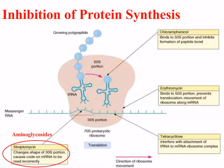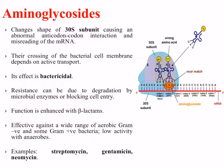The fourth and last class of protein synthesis inhibitors are the aminoglycosides, of which streptomycin is a member. This affects the 30S ribosome, changing its shape and causing codons on mRNA to be read incorrectly. The aminoglycosides change the shape of the 30S subunit, causing an abnormal anticodon-codon interaction and a misreading of the mRNA, so the wrong amino acid is added to the growing polypeptide chain and proteins are not assembled correctly. Its effect is bactericidal. Crossing the bacterial cell membrane depends on active transport, and resistance can be due to degradation by microbial enzymes or blocking of cell entry. Its function is enhanced by the use of beta-lactam antibiotics.